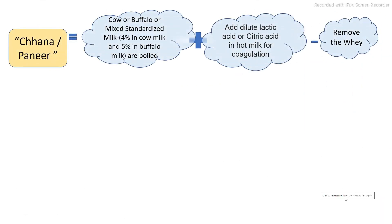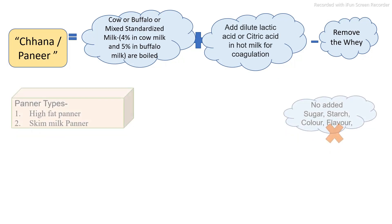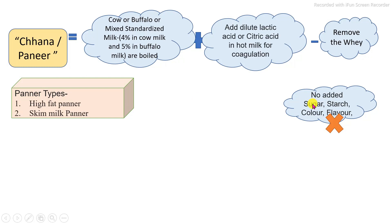Paneer is a product obtained from coagulation of milk, in which the raw milk — that is cow or buffalo, or mixed as standardized milk — in which minimum fat percentage required, that is 4% in cow and 5% in buffalo milk, are properly boiled. After that, hot dilute lactic acid or citric acid solution is added into the milk for the protein coagulation process. After coagulation, the whey is removed by straining, resulting in chana and paneer. Other ingredients like sugar, starch, color, and flavors are not allowed in this product.